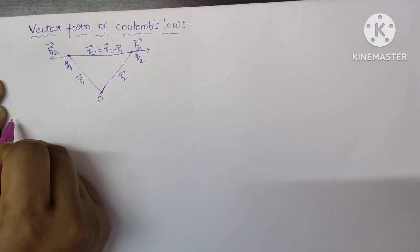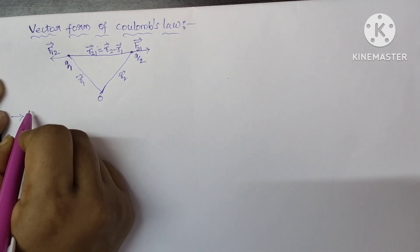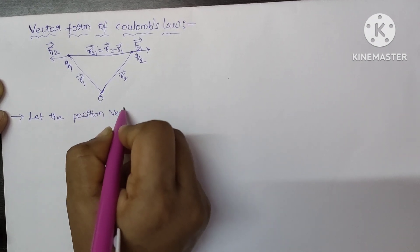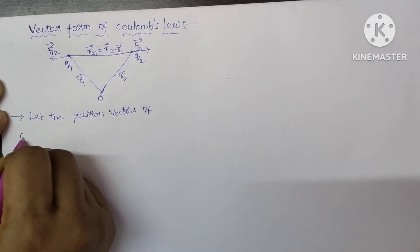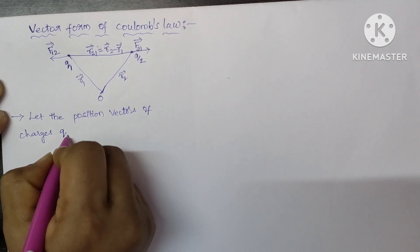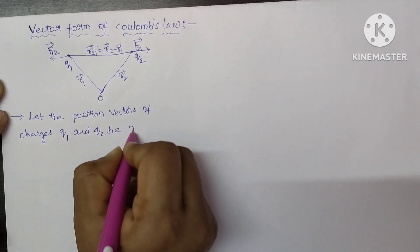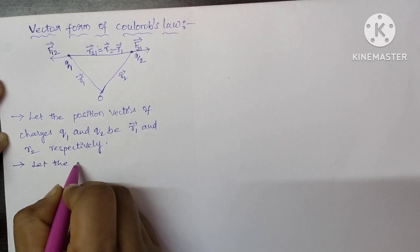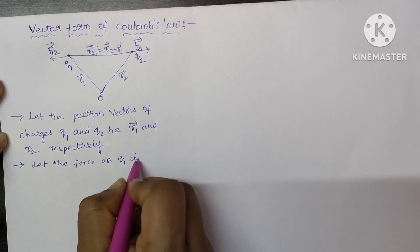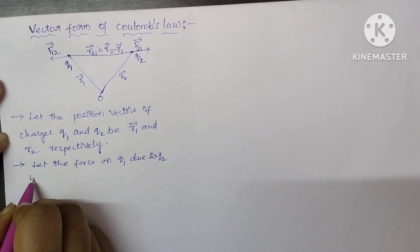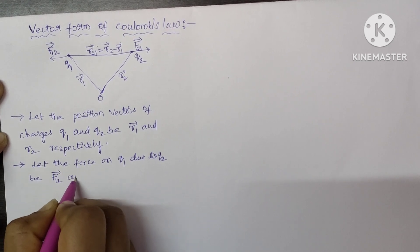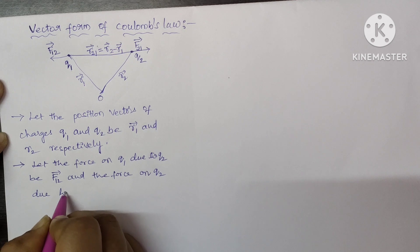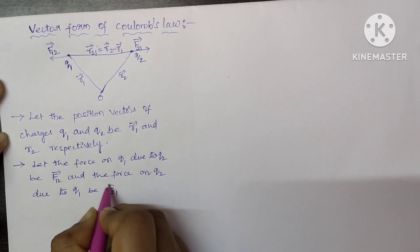Let us describe this diagram in words. Let the position vectors of charges Q1 and Q2 be R1 and R2 respectively. Let the force on Q1 due to Q2 be F12, and the force on Q2 due to Q1 be F21.